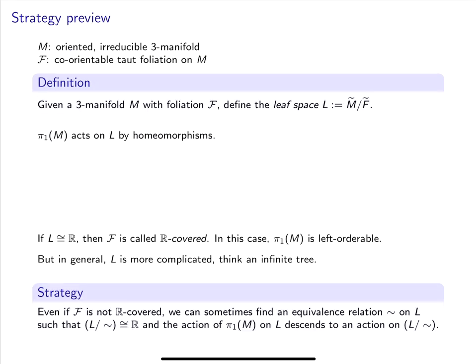In a moment, I'll go over some more precise definitions, but let me begin with a quick preview of the strategy I'll be taking for those of you who are already comfortable with definitions. So, let M be an oriented irreducible three-manifold and F a co-orientable taut foliation on M.